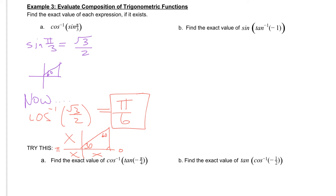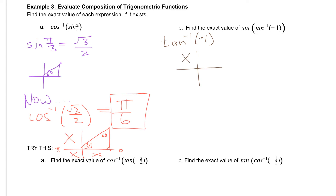Let's try one more together. Letter B: we have the sine of the tan inverse of negative 1. We've got to figure out what is the tan inverse of negative 1 — that's our first task. So, tan inverse of negative 1: thinking about our inverse rules, our tangent function cannot be in the second or the third quadrant. Remember, tangent goes from negative pi over 2 to positive pi over 2.